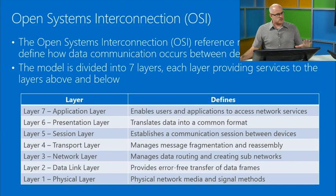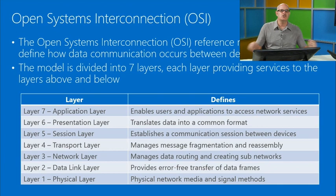This model may seem daunting, but it's the model that enables network communication. People ask how to remember it — mnemonics help. One mnemonic from the top down: 'All People Seem To Need Data Processing' — All=Application, People=Presentation, Seem=Session, To=Transport, Need=Network, Data=Data Link, Processing=Physical.